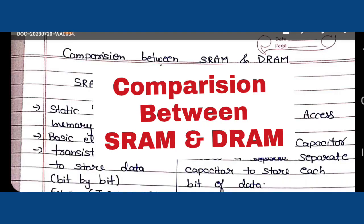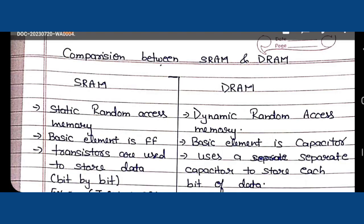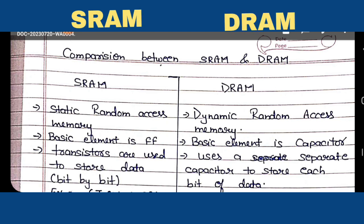Hello everyone. In this video lecture on digital electronics, I am going to discuss the differences between SRAM and DRAM. SRAM stands for Static Random Access Memory and DRAM stands for Dynamic Random Access Memory.